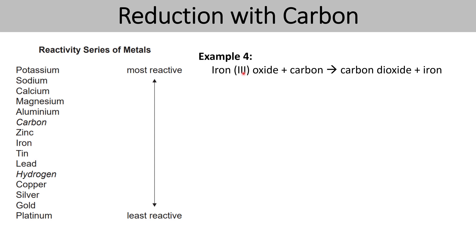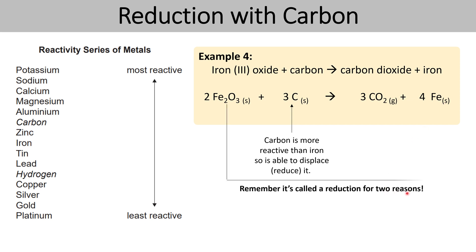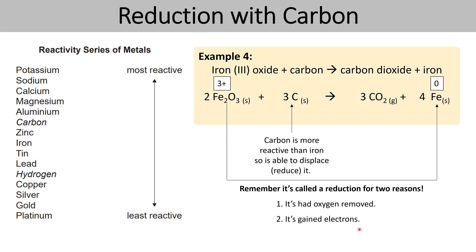Let's have a look at a final example. Iron oxide plus carbon goes to make carbon dioxide plus iron. We can see that carbon is more reactive than iron, so carbon is able to displace iron. The carbon is now bonded with the oxygen that originally belonged to the iron, and the iron has been displaced. We call this reduction: first, the iron has had its oxygen removed; and second, iron has a 3+ charge in iron oxide but a 0 charge as an element, so it's gained electrons. The half equation is: Fe³⁺ + 3e⁻ → Fe.